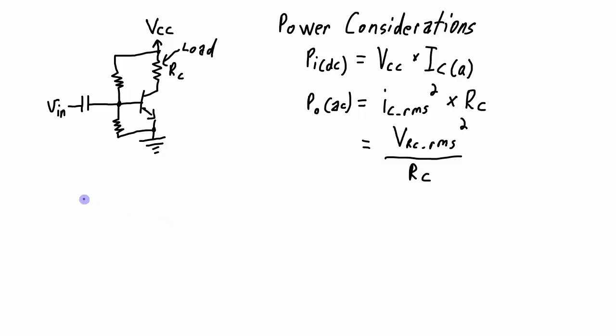And with these two powers, the input power and the output power, we can calculate the efficiency. The efficiency, of course, is going to be the amount of usable power. So that's how much power gets to the output divided by how much power we apply at the input and then times 100%.